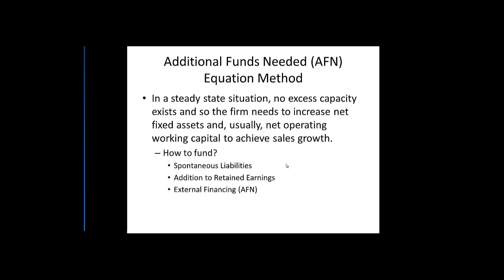To calculate additional funds needed, I'll work through an example using an Excel spreadsheet. In a steady state situation, no excess capacity exists. Excess capacity usually occurs with fixed assets — think of a classroom seating 40 students. If we have 30 students, we have excess capacity of 10 and could grow class size by 25% without needing additional desks or space. So when forecasting, we need to keep in mind that excess capacity may exist and fixed assets may not need to grow with sales.